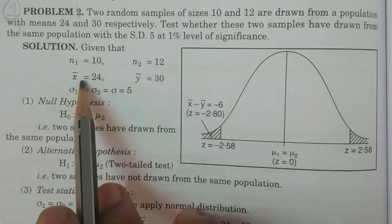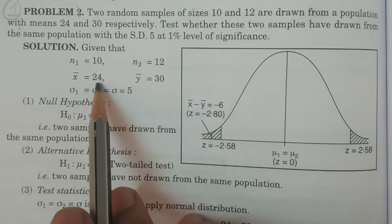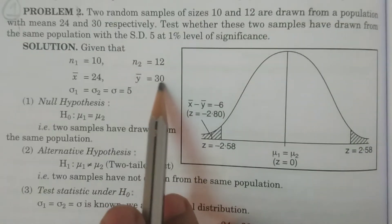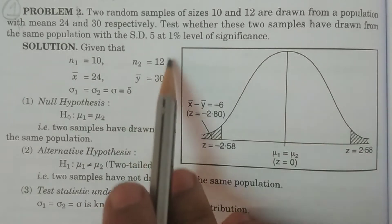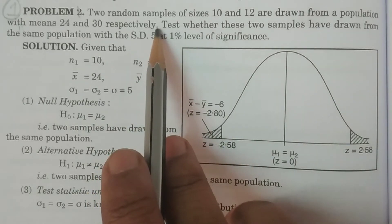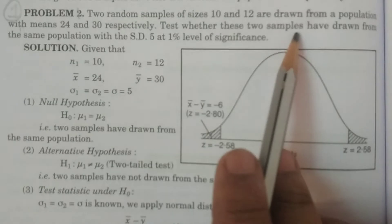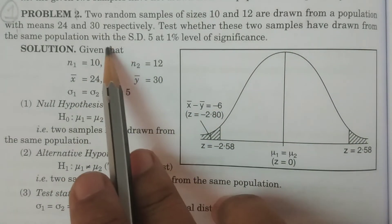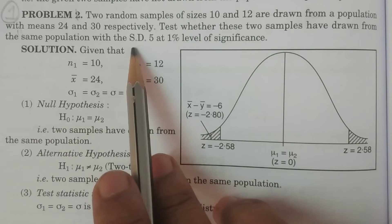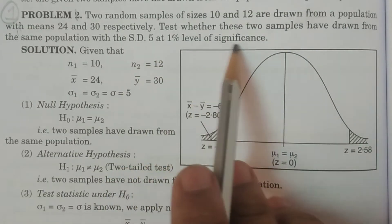For example, you consider X bar, the first sample mean is equal to 24 and Y bar is equal to 30. This is the data up to here, continue reading. Test whether these two samples have drawn from the same population with the standard deviation 5 at 1% level of significance.